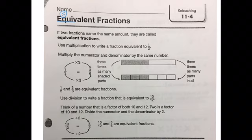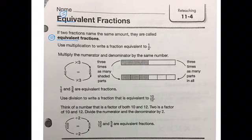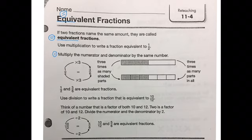We're talking about equivalent fractions and we know that equivalent is another word for equal. If two fractions name the same amount, they are called equivalent fractions. Anytime you see equivalent fractions, underline it and put an equal sign to remind you what it means. The directions say to use multiplication to write a fraction equivalent to one half. One way that we can do this is to use multiplication. We can multiply the numerator and denominator by the same number.